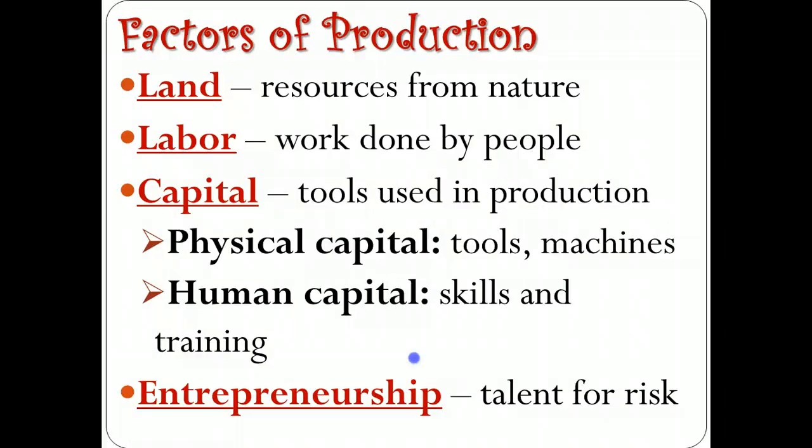We're going to look at the factor markets for the four different factors of production: land, labor, capital, and entrepreneurship. Capital breaks down into physical capital — the tools and machinery that go into making things — and human capital, which is the skills and training of individuals who are employed. Land, labor, and capital can all be purchased within a factor market, and therefore they have a price at which they are purchased. These are called factor prices.